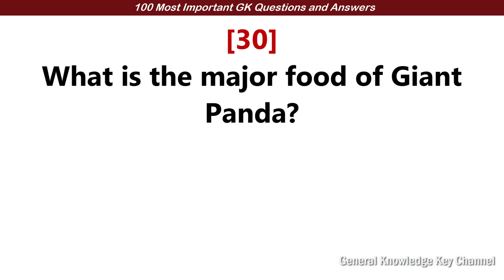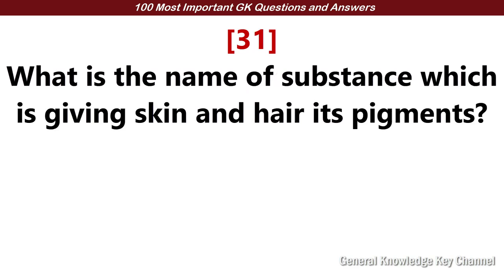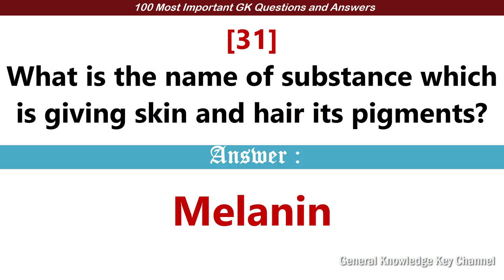What is the major food of a giant panda? Answer: Bamboo. What is the name of the substance which gives skin and hair its pigment? Answer: Melanin.